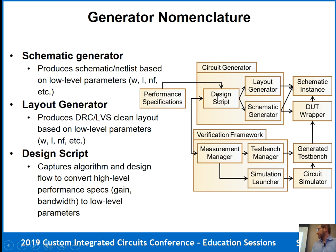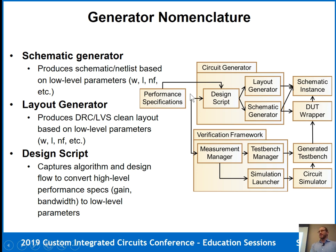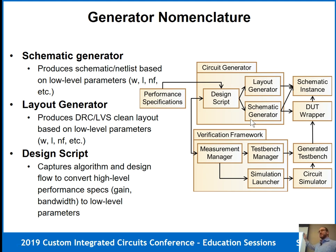The final piece is the design script, whose job is to take higher-level performance specifications — gain, bandwidth, distortion — and convert them into the lower-level parameters the layout and schematic generators need. This is not necessarily feedforward; there are often feedback loops. The design script will take a guess at a sizing, produce an actual layout, extract it, and feed back modifications. That's where a lot of the overall design loop comes into the picture.